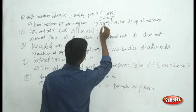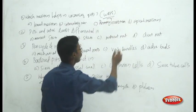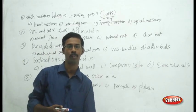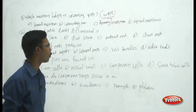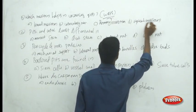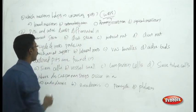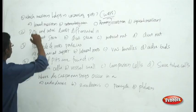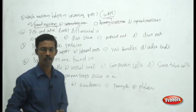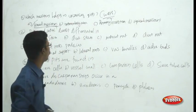Primary meristem is not involved in increasing girth because primary meristem is common to all plants and participates in apical growth — shoot, root, and general elongation. Apical meristem is a type of primary meristem, and intercalary meristem does not belong to secondary growth. The answer is lateral meristem — specifically the vascular cambium — which is involved in increasing the girth of the plant.